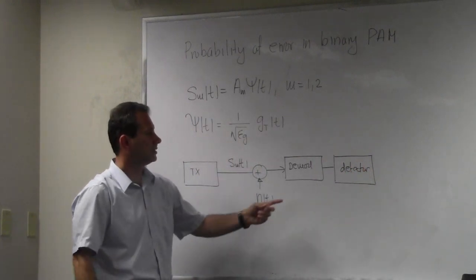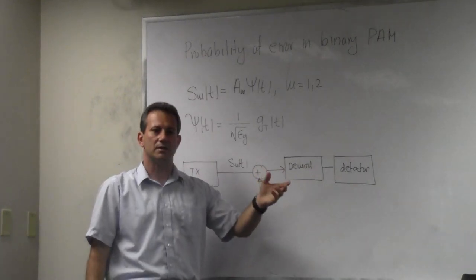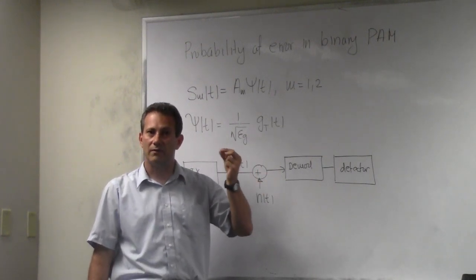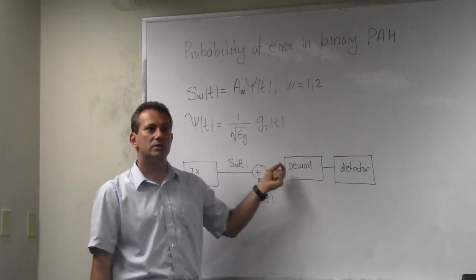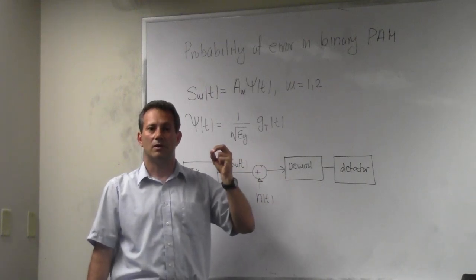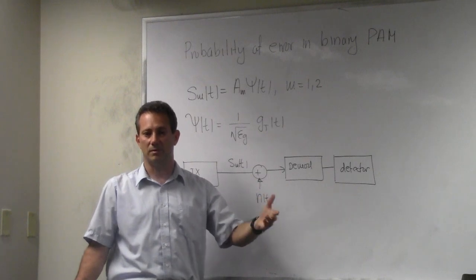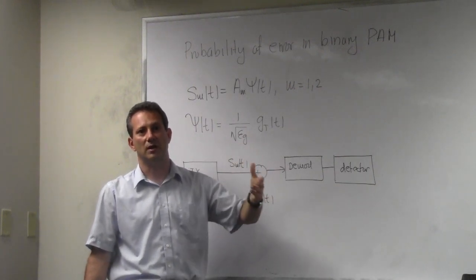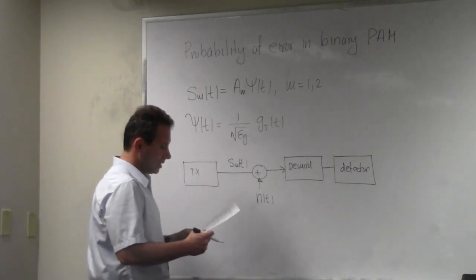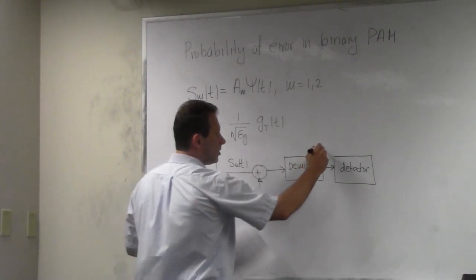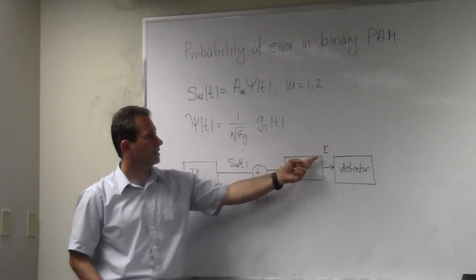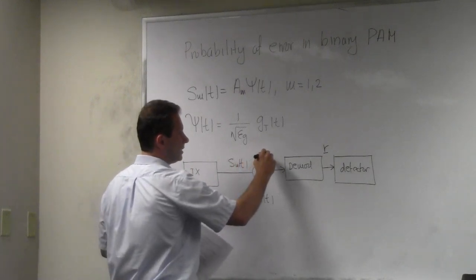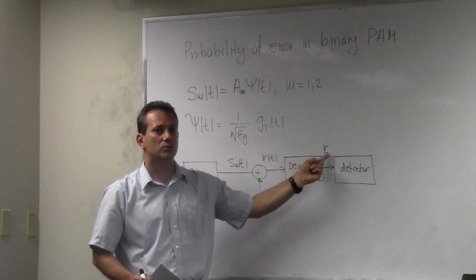Our detection is going to be the simplistic one, where you assign the symbol to the closest symbol in your constellation. This is what we call maximum likelihood detection, and it has one important assumption embedded in it: all the symbols are equally probable. We make it that way through our statistical encoding and randomization on the transmitter side. At this point we have what we call R — this is what is produced by the demodulator. The demodulator takes signal R(t), projects it along the basis vectors, and produces this vector R.